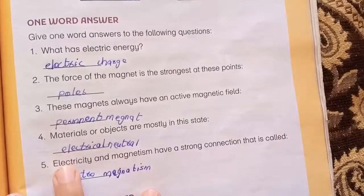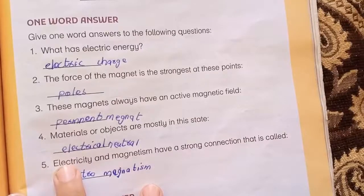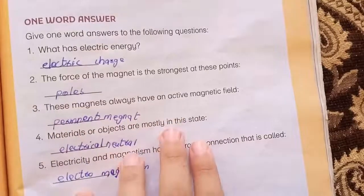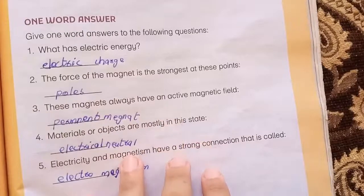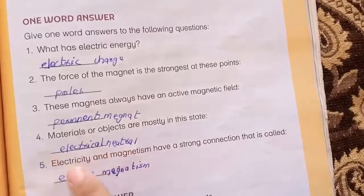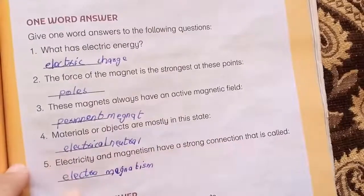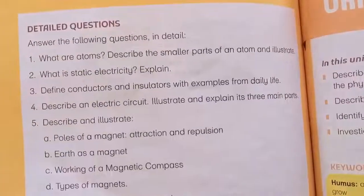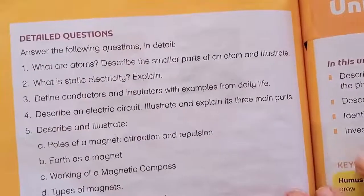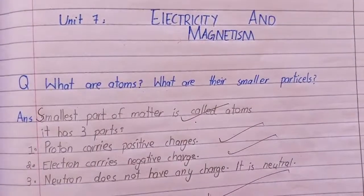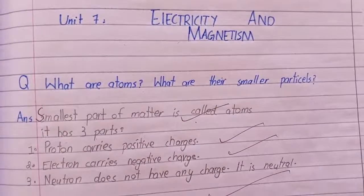The force of a magnet is strongest at its poles. Magnets always have an active magnetic field. Electrically neutral material or objects are in a state of electrical neutrality. Electricity and magnetism have a strong connection that is called electromagnetism. The smallest part of matter is called an atom. It has three parts: proton, which has a positive charge; electron, which has a negative charge; and neutron, which does not have any charge - it is neutral.